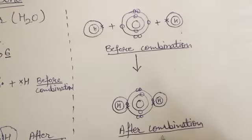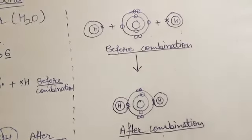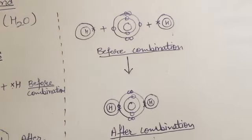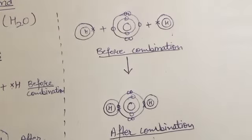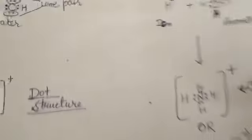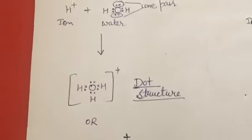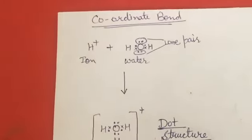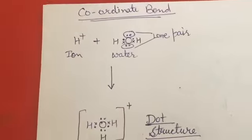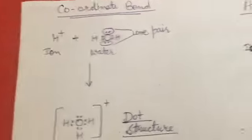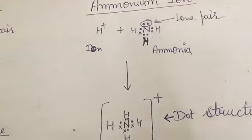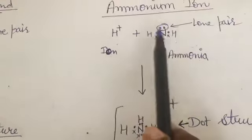The next type is the coordinate bond, which is the most important. Two examples are hydronium ion and ammonium ion. I will explain the example of ammonium ion.